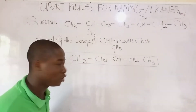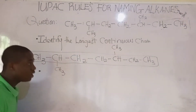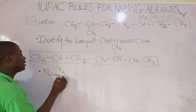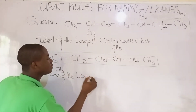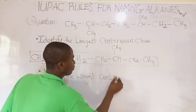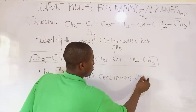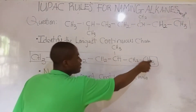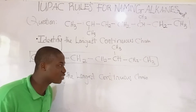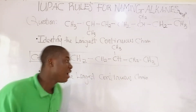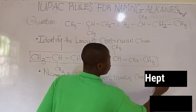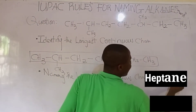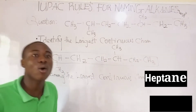We've gotten 7 carbons, so the next step is naming the longest chain. We count 1, 2, 3, 4, 5, 6, 7 — 7 carbons. Since it's an alkane, we take the prefix for 7 (hept-) and add the alkane suffix, so the parent chain name becomes heptane. Heptane is the longest continuous chain.